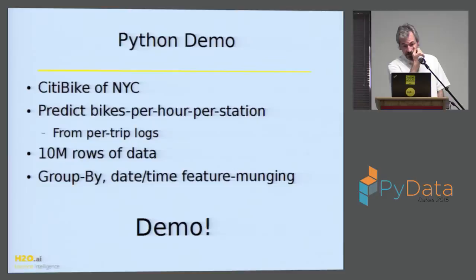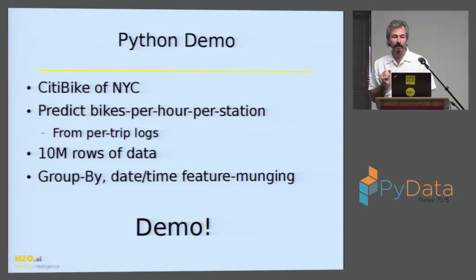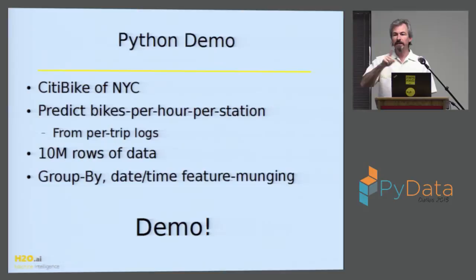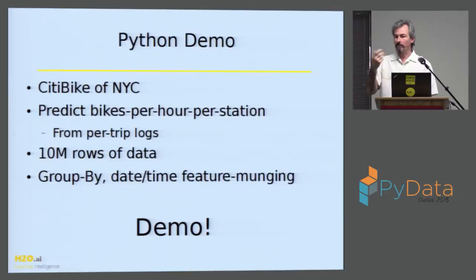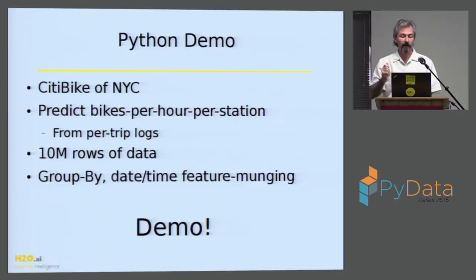Demo time. I'm going to run IPython notebook and grab 10 million rows of CitiBike data from New York City — bicycles all over the city in bike stations. You put in a credit card, grab a bike out of a locked rack, and you're charged for the duration you held it. I have 10 million trips. I'm going to try to figure out the number of bike trips that leave any given station on any given day, because bikes get redistributed at night and need to be rebalanced so busy stations near major metro centers have enough bikes.